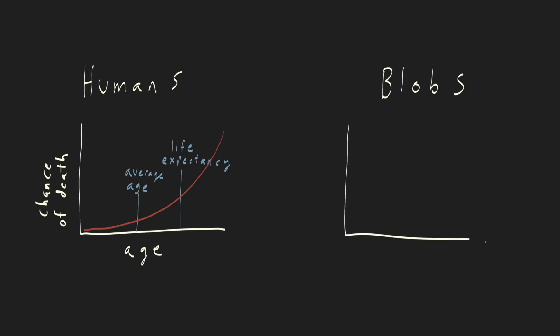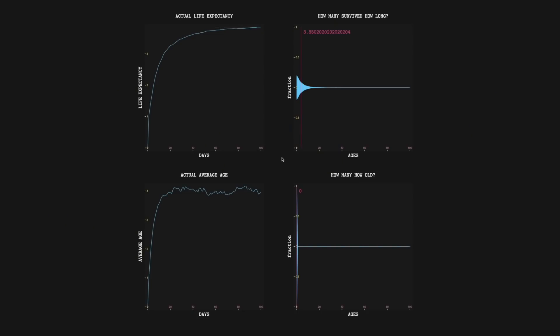But blobs are different. Their age has no impact on their chance of survival. So when the blobs get mixed up and things all balance out, the average age will be the same as life expectancy. But that's only when things balance out. And I want to figure out an equation that matches what we're seeing through all the generations. So we need a different way to look at this.